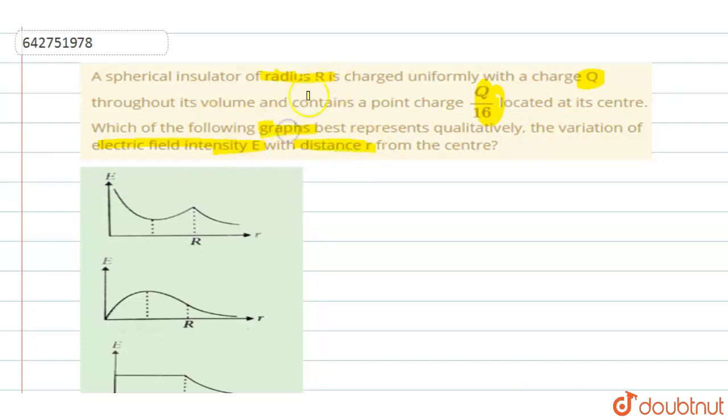Which graph is the correct option they are saying? See, a spherical insulator of radius R is charged uniformly which means along the surface you have a charge uniform distribution of the charge located and you can see that when a charge is present throughout its volume, it contains a point charge Q by 16 at its center.